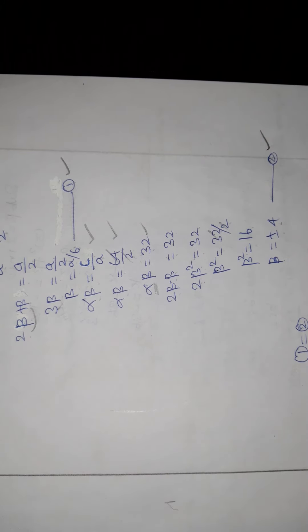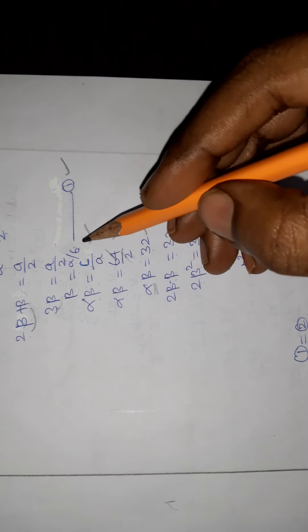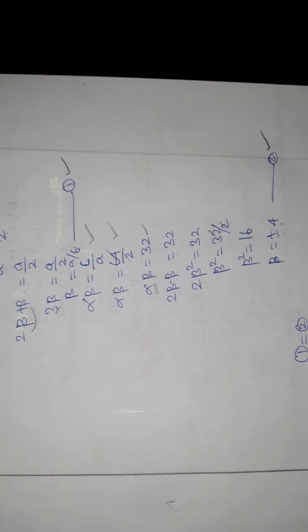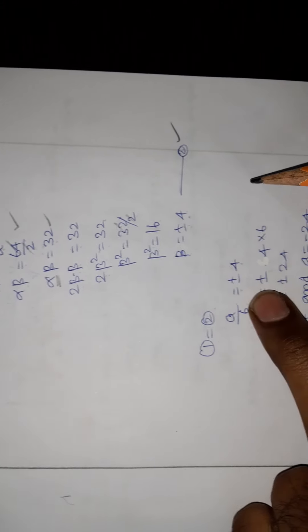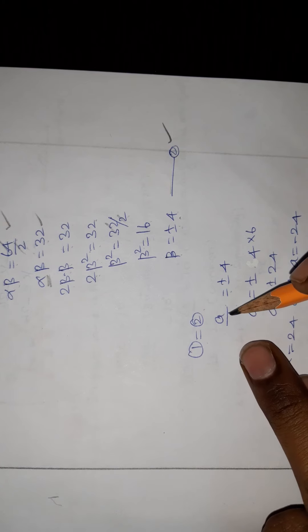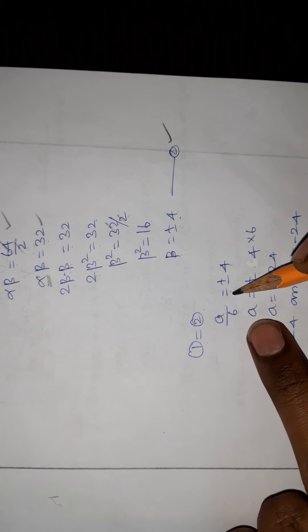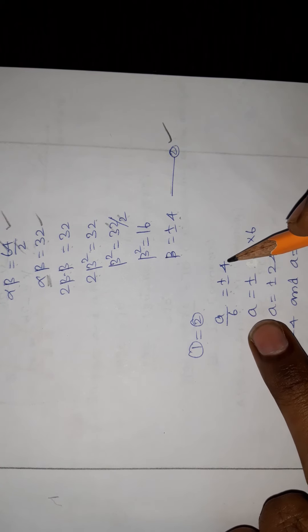Equating equation 1 and equation 2: since both expressions equal beta, we set a by 6 equal to plus or minus 4.